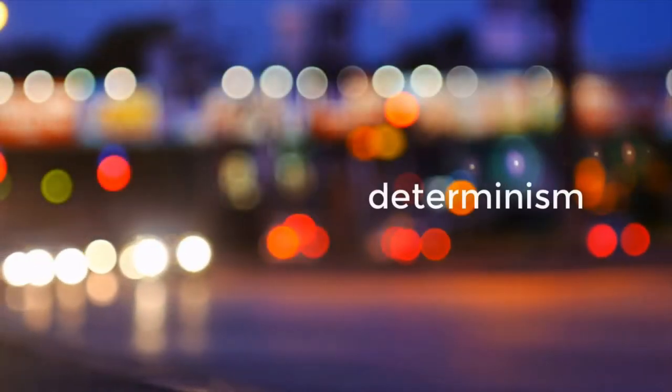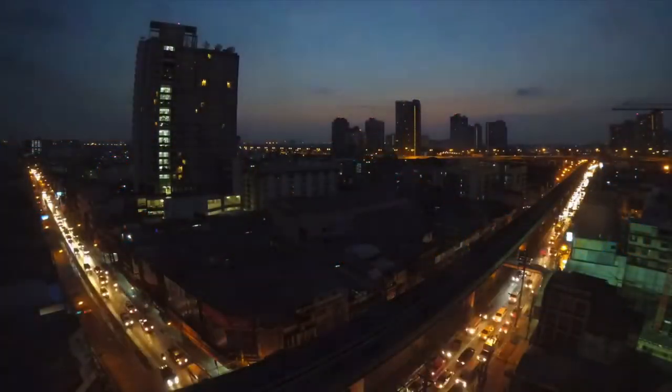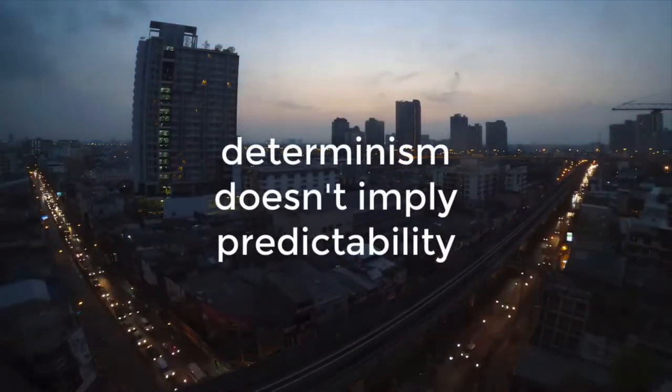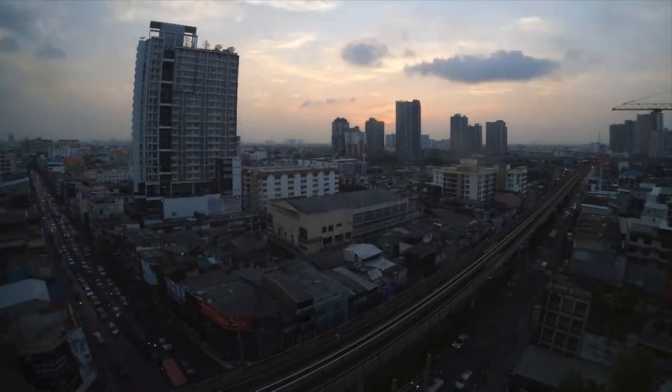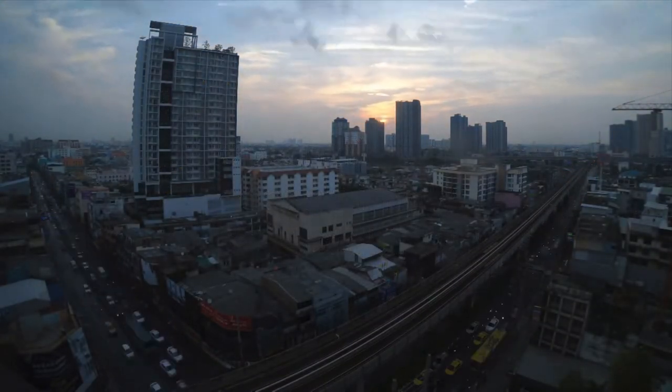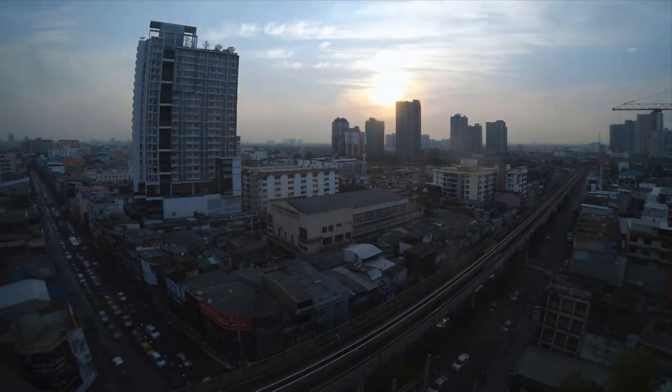Science, or at least classical physics, tells us that everything happens for a reason. What turns out to be difficult is to find or identify those causes. Something that we will explain later in this course is that determinism and predictability are not the same thing, nor do they imply each other. In particular, we will see that determinism does not imply predictability.